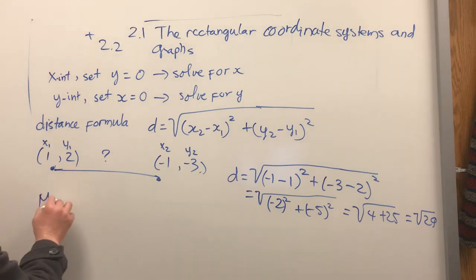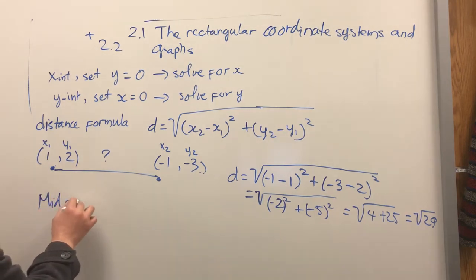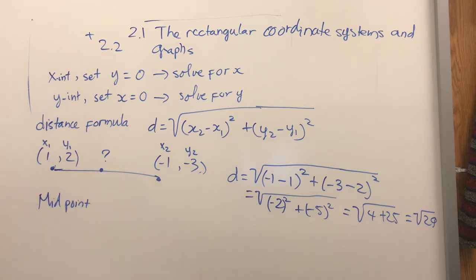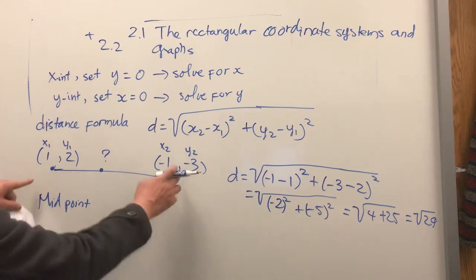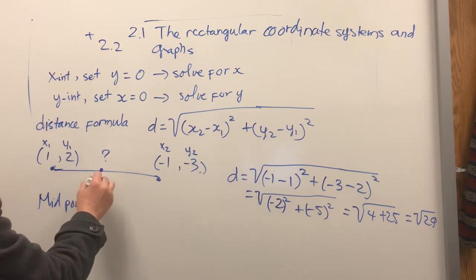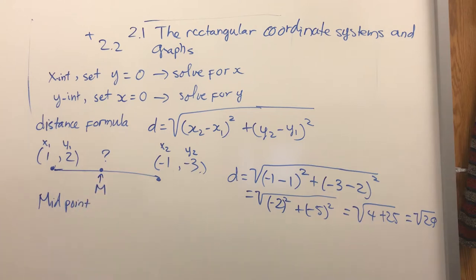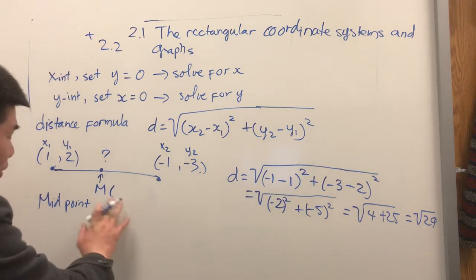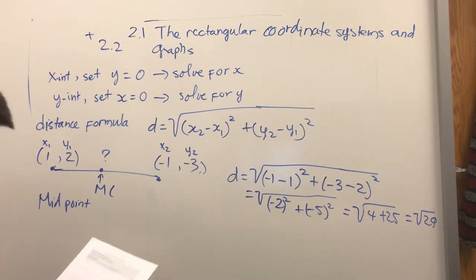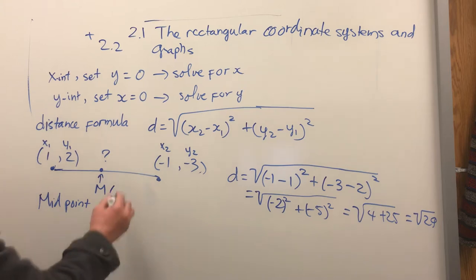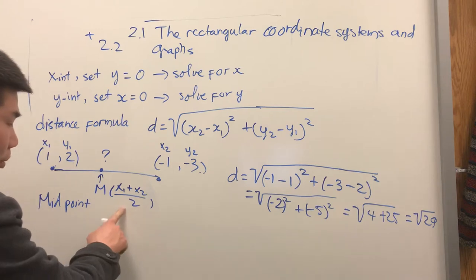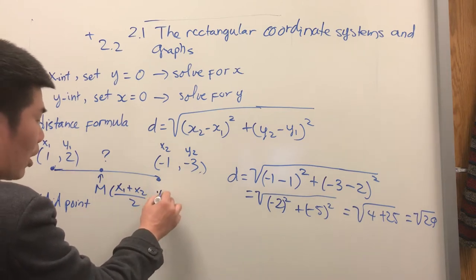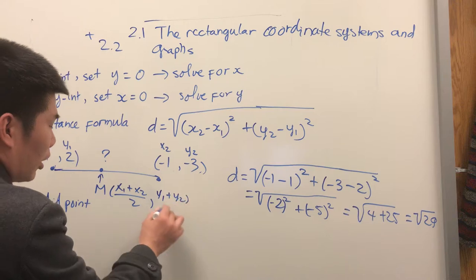What about midpoint? We use the same two points and look for the coordinate of the midpoint. The midpoint formula is: x equals (x1 plus x2) divided by 2, and y equals (y1 plus y2) divided by 2.